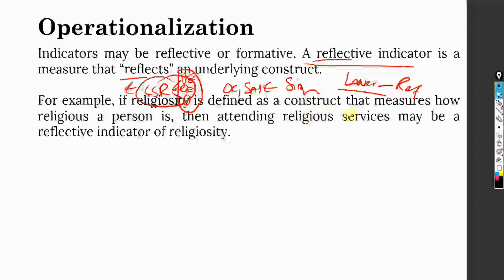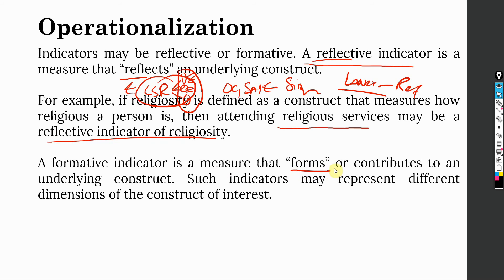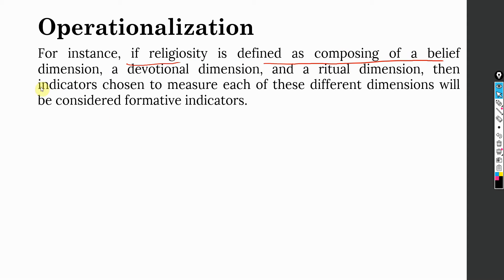If religiosity is defined as a construct that measures how religious a person is, then attending religious services may be a reflective indicator of religiosity. A formative indicator is a measure that forms or contributes to the underlying construct. Religiosity is reflected in how well or how religious the person is and that is reflected in attending religious services. Whereas, in case of formative indicators, the indicators combine and form or contribute to the underlying construct, just like body mass index.